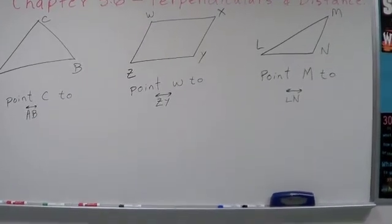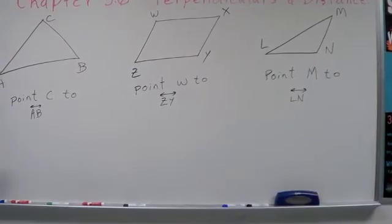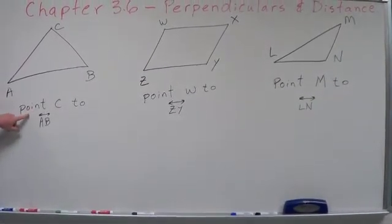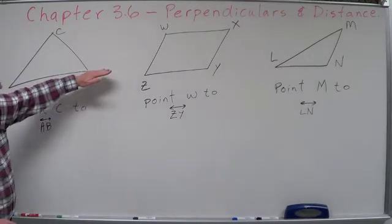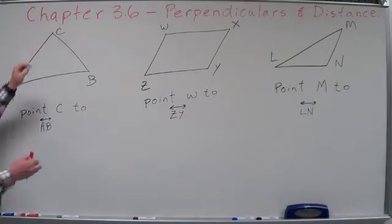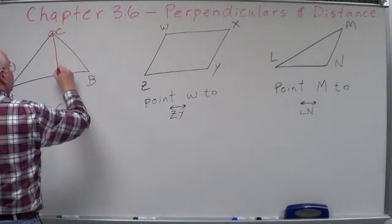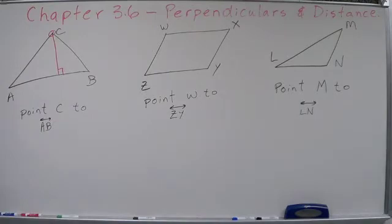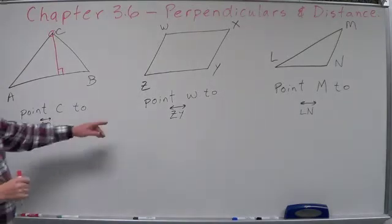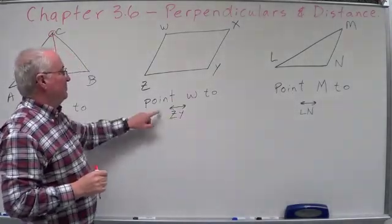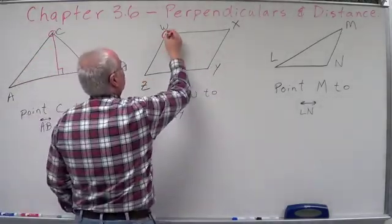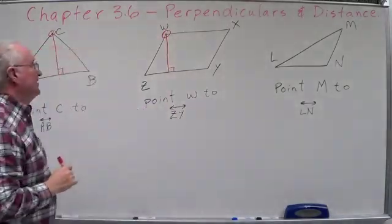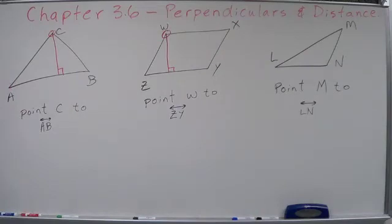Here are some sample problems. What we want to do is find and create a segment that will show us the distance from point C to line AB. Line AB goes right here, and point C is right there — the distance is the perpendicular distance, so we simply draw a segment perpendicular from C to line AB. On the next one, we want to draw a segment that shows the distance from point W to line ZY. Here's ZY, here's point W, so we simply draw a line segment from W that is perpendicular to ZY.